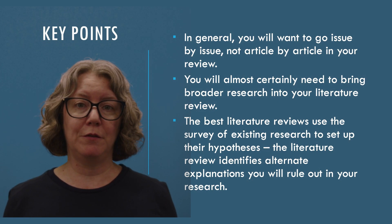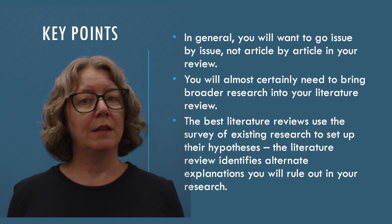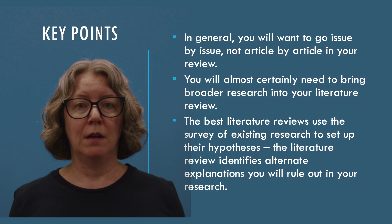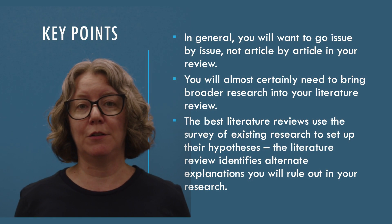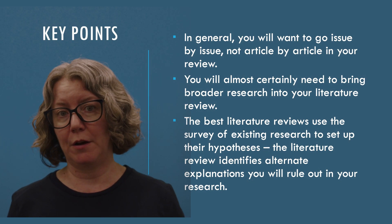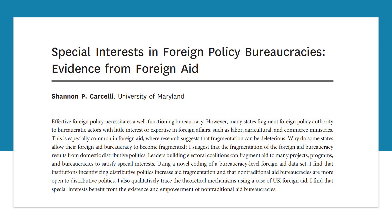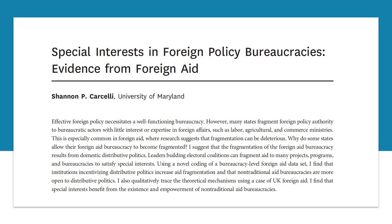Finally, you should try to have your lit review set up your hypothesis. This is typically done in one of two ways: using existing research to support the relevance of your hypothesis, or using existing research to identify alternate explanations you need to rule out. For example, in this paper on how states decide how to distribute foreign aid, after establishing that domestic political agendas are one reason why foreign aid is ineffective, the author describes her theory about the fragmentation of aid budgets and identifies hypotheses that can test it. She then returns to the idea of domestic politics when she describes the alternate explanations she needs to rule out.